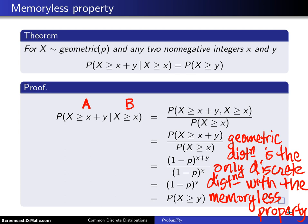And in fact, there is a proof that says the geometric will be the only discrete distribution with this property, and the exponential will be the only continuous distribution with this property.